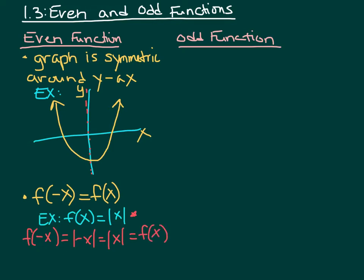You'll also find that no matter what value you plug in for x, if you take f of negative 1, the absolute value of negative 1 is 1. And that's going to give you the same thing as f of 1, which is the absolute value of 1, and that also gives you 1.